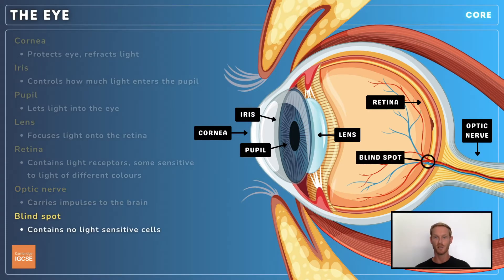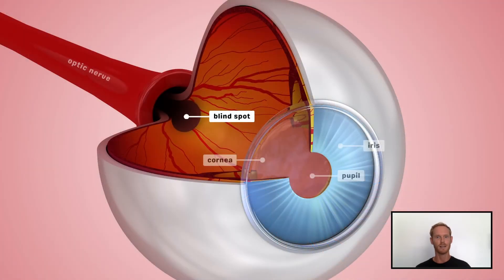Finally, the blind spot is a small area on the retina directly in front of the optic nerve. It contains no light-sensitive cells, hence creating a blind spot in our vision.